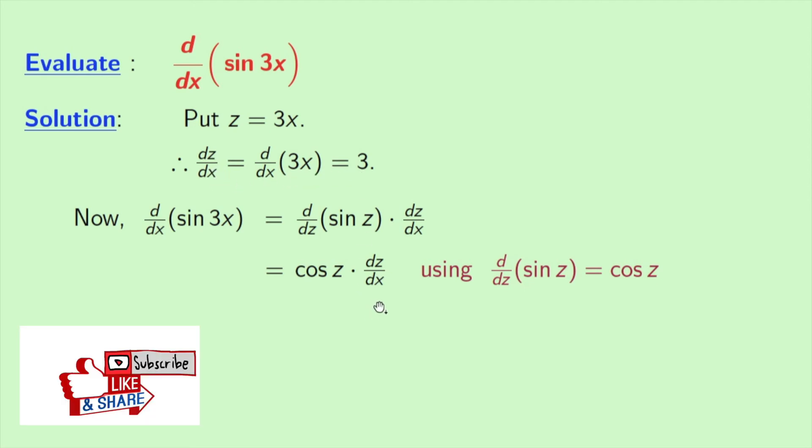So putting the value here, we get 3 cos z. Again z is equal to 3x. So after putting that, we get 3 cos 3x. And this is our final answer.